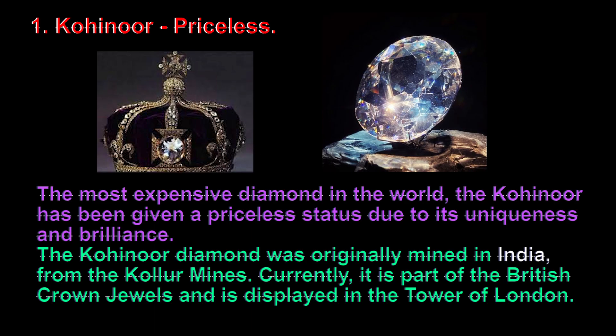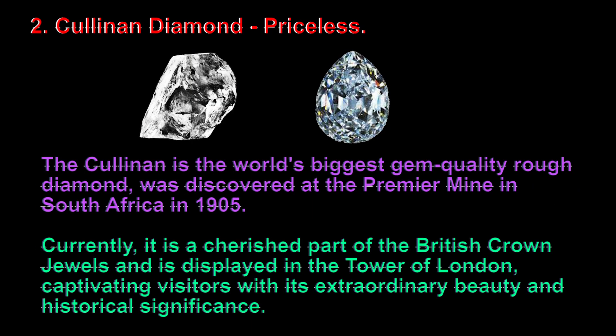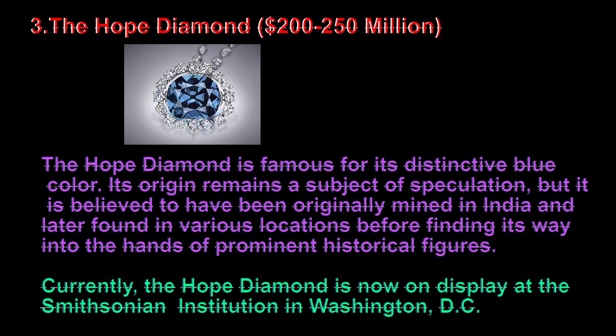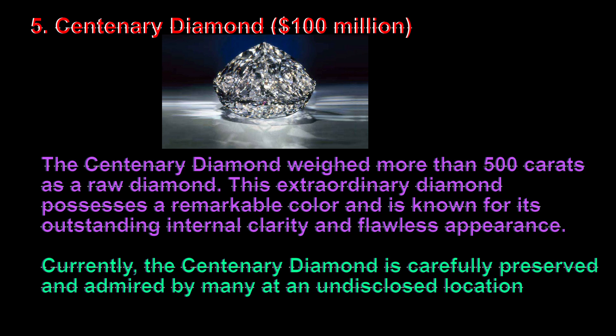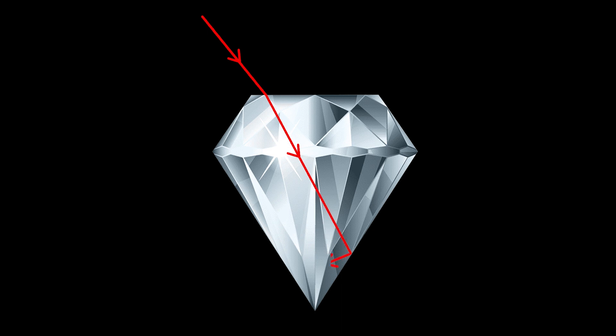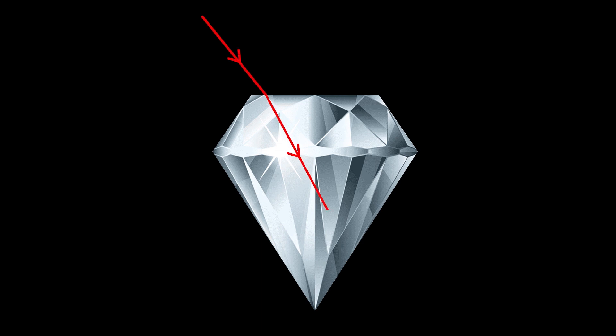Diamonds are precious and the hardest material in the world. Their value is determined by the four Cs: carat, cut, clarity, and color. The magic happens when skilled diamond cutters create facets that act like mirrors, reflecting light within the gem. As light enters the diamond, it slows down and undergoes total internal reflection, bouncing from one facet to another, creating a sparkling effect.